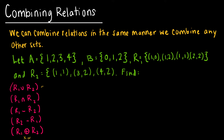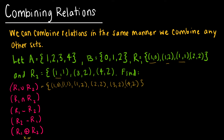First, let's look at the union. The union of sets just includes all of the ordered pairs from each set. So I would have (1,0), (1,1) — that's coming from R2 — (1,2), and also (1,1) over here as well. I've also used (2,2), (3,2), and (4,2). So those are all of the values in the union of the two relations.